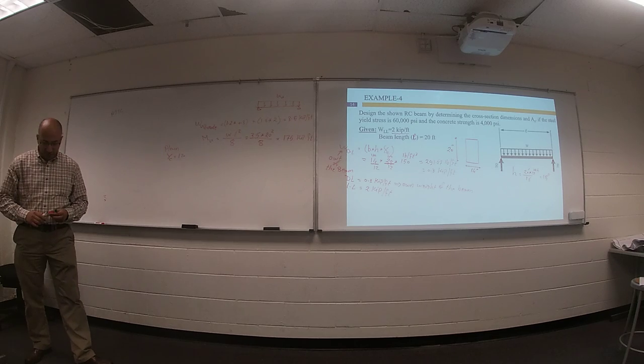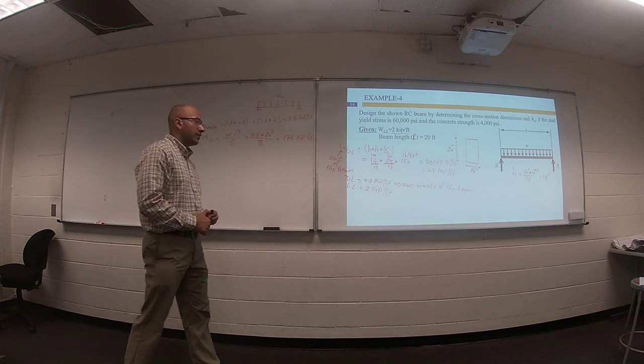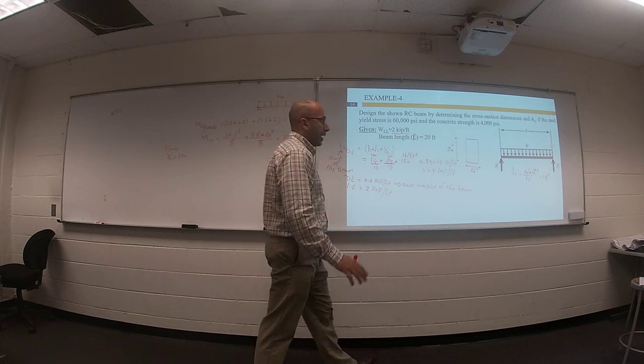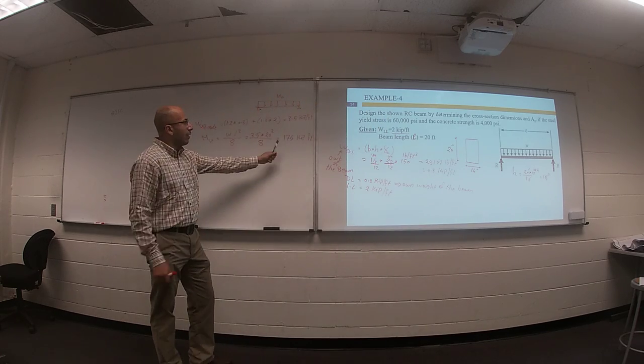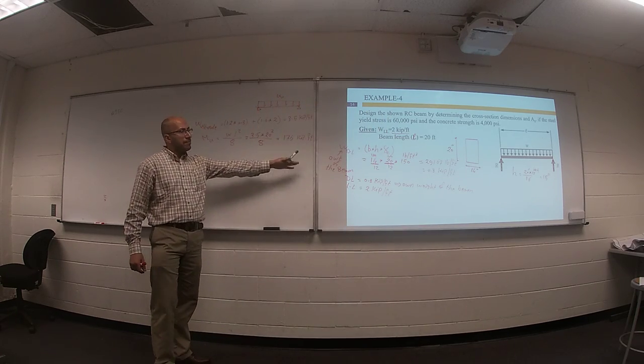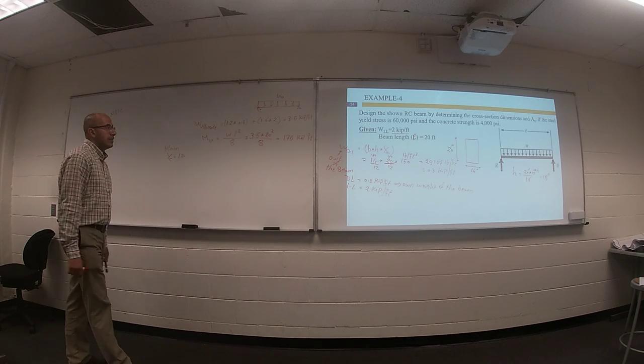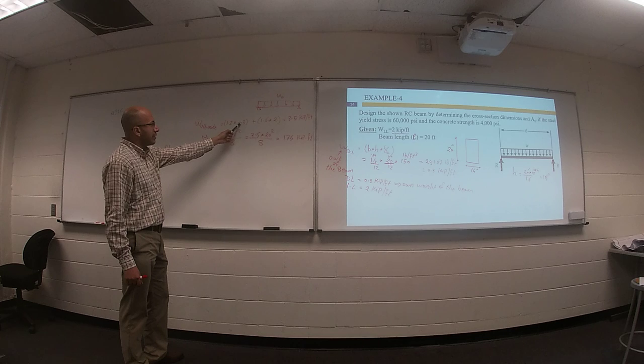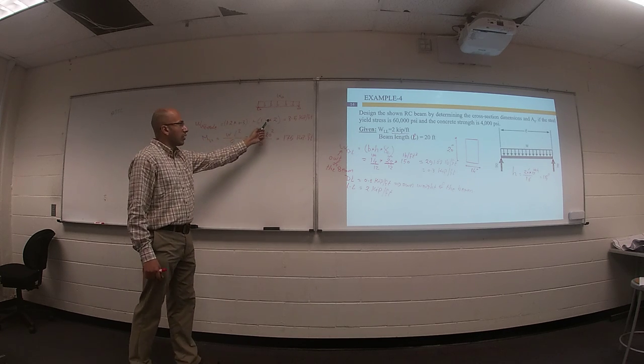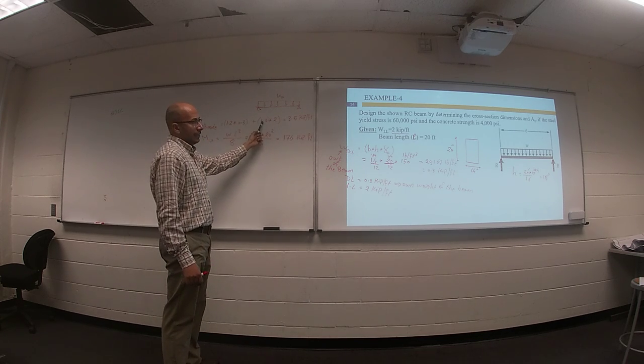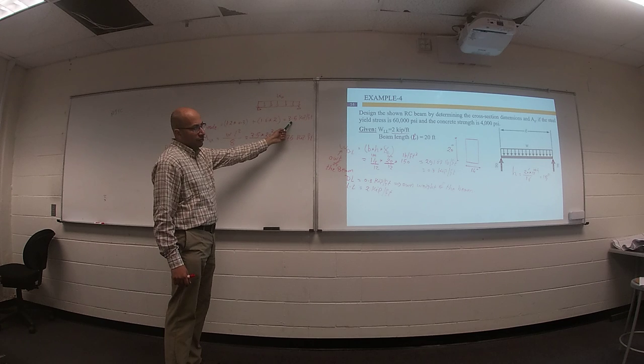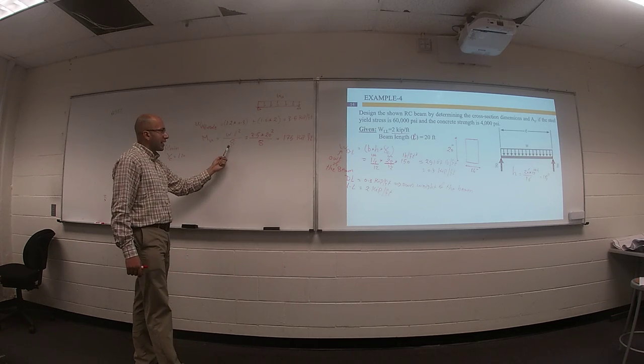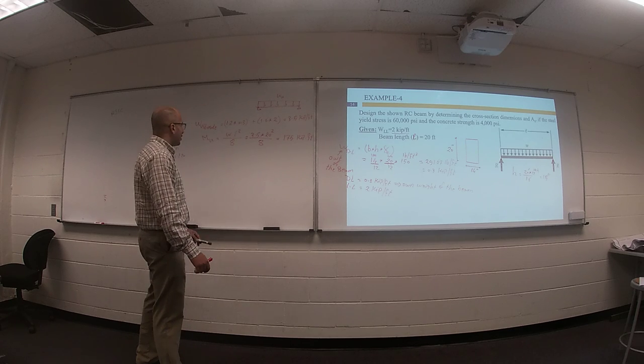According to structural analysis results, the ultimate moment on this beam equals 175 kip-foot. This value comes from factored load - your dead times 1.2, your live times 1.6. You can get your factored load. From factored load and the structural analysis WL² over 8, I can tell you what is the value of M ultimate.